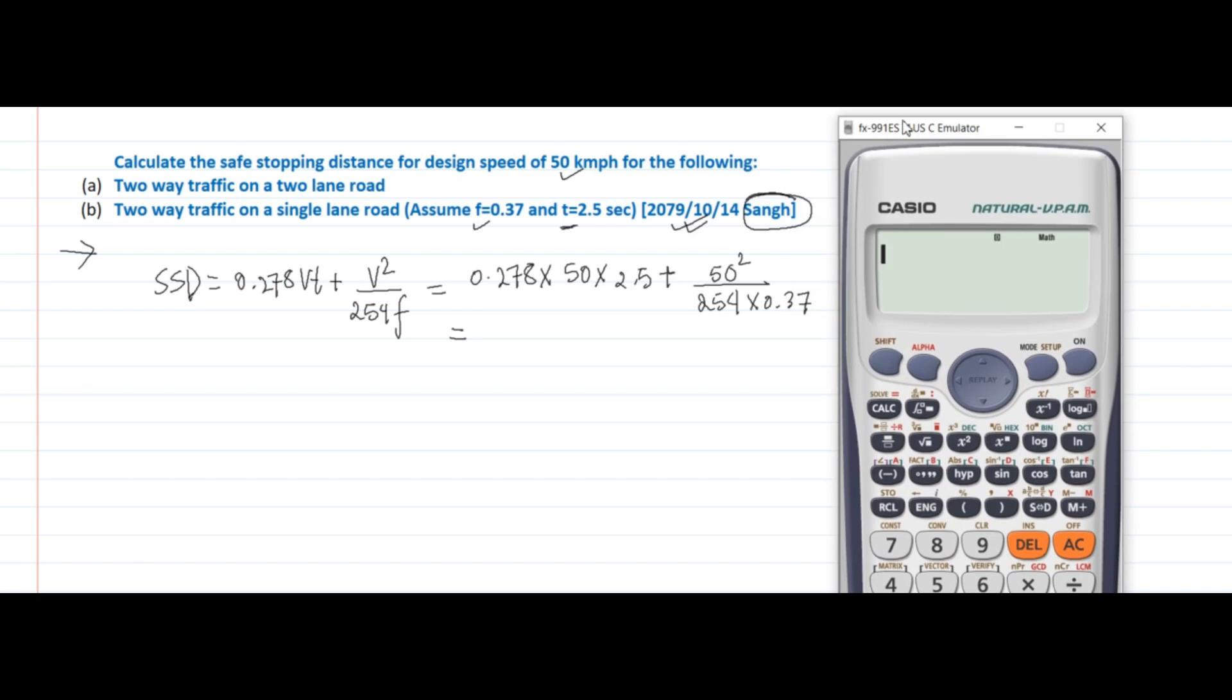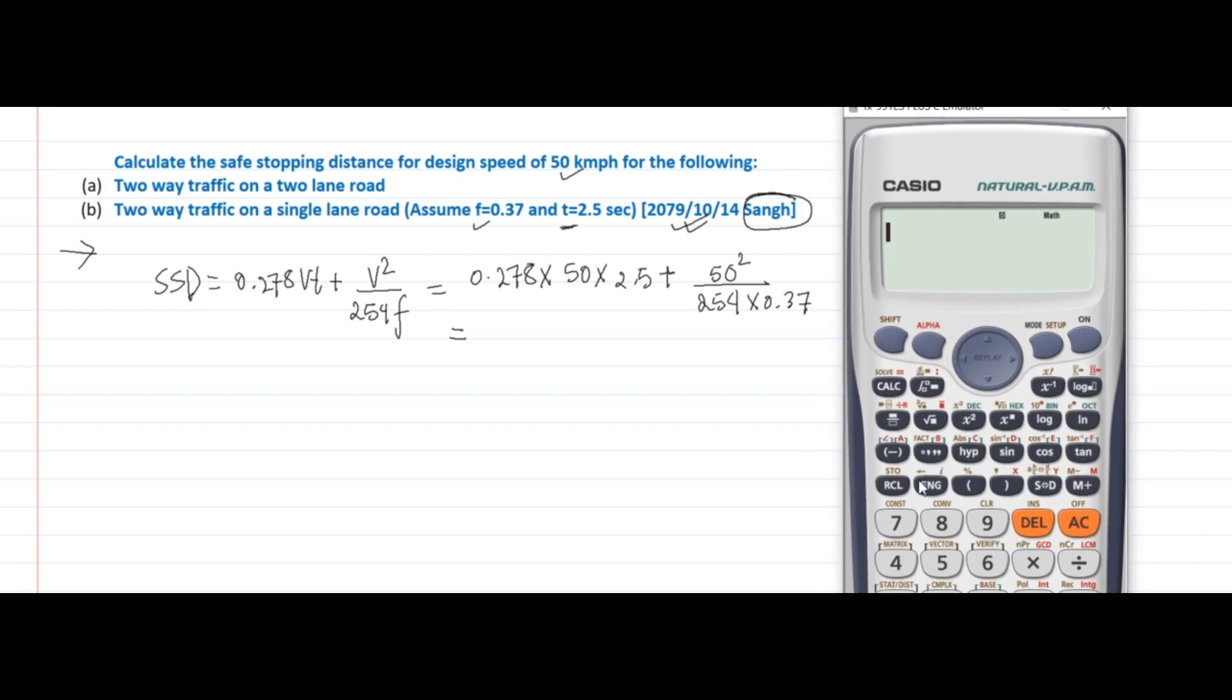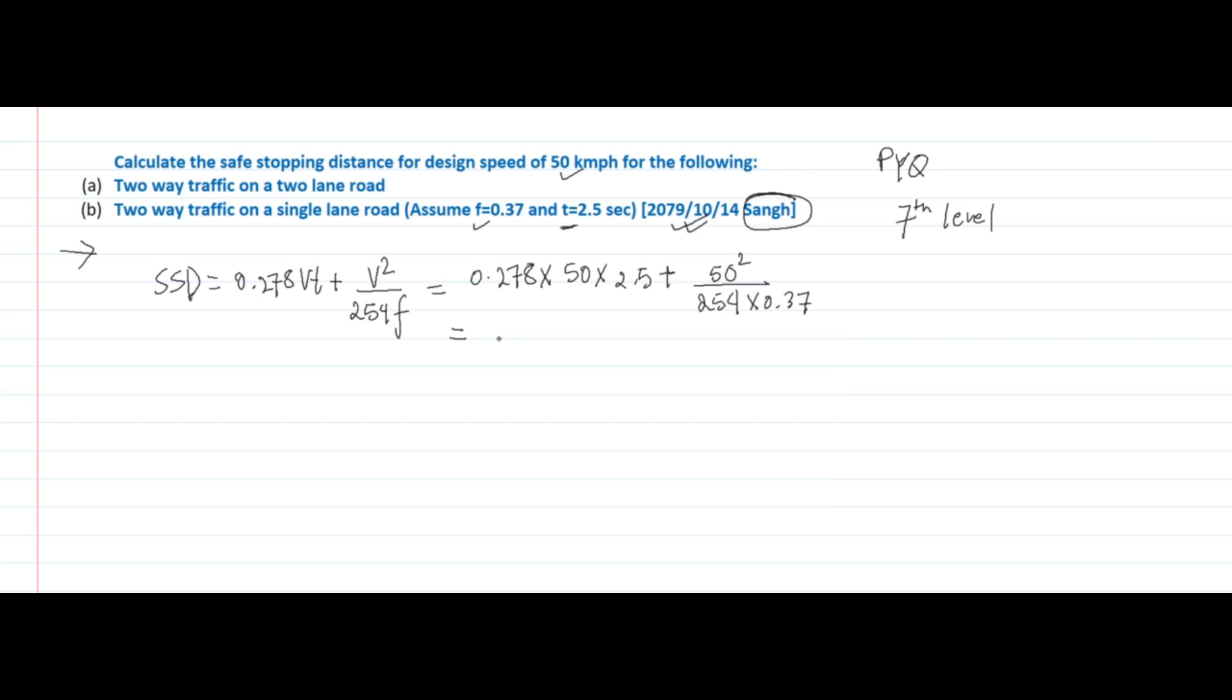This will be 0.278 into 50 into 2.5, plus 50 square divided by 254 into 0.37, so it will be 61.35 meters. This will be in meters. Now for the first question...